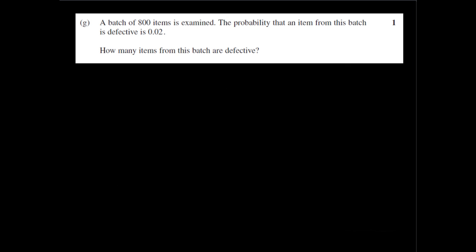Okay, so question 1g is a batch of 800 items is examined. The probability that an item from this batch is defective is 0.02. How many items from this batch are defective? Okay, so we've got 800 items, 0.02 of which are expected to be defective. So if you just plug that into the calculator, you will get 16. Alternatively, you could have converted this into a fraction, which is 2 over 100. And that has to be multiplied by the 800 items. Cancel 100 with 800. So 800 becomes 8. And 100 becomes 1. 8 times 2 is 16. So the answer is 16 items are defective.